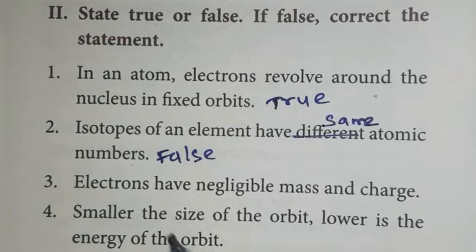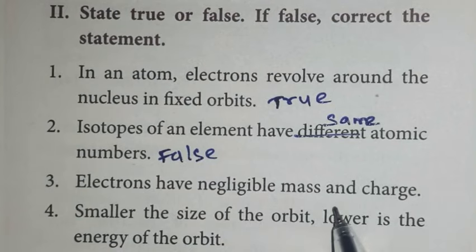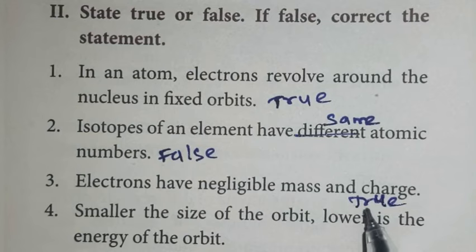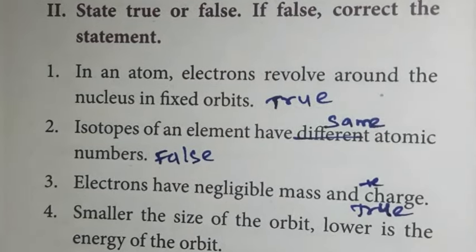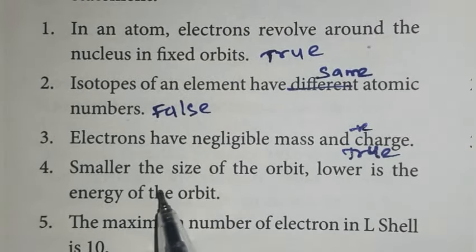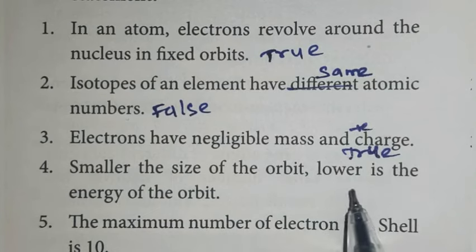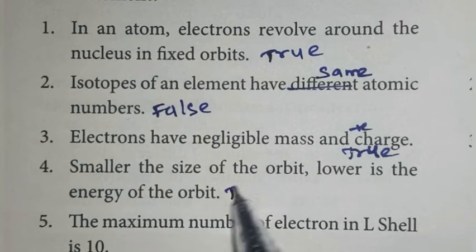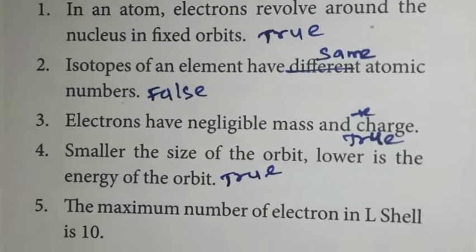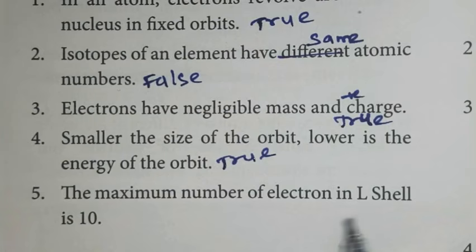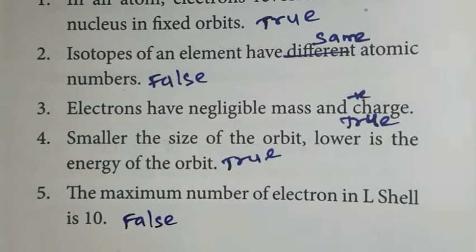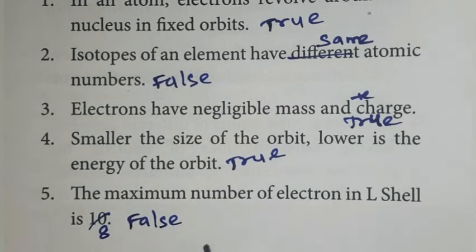Third one: electrons have negligible mass and charge. Yes, this is true. For modification, we can write negative charge also. Fourth one: smaller the size of the orbit, lower is the energy of the orbit. True. Fifth one: the maximum number of electrons in L-shell is 10. False. Eight. Because in K-shell it's 2, and in L-shell maximum number of electrons is 8.